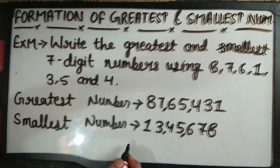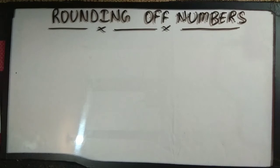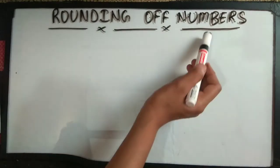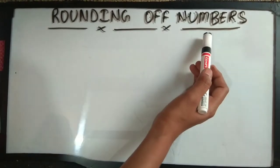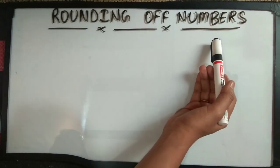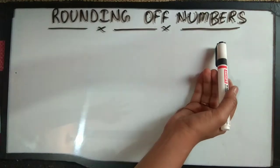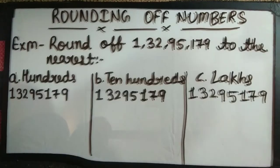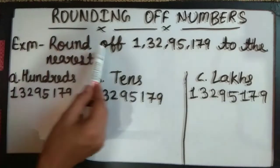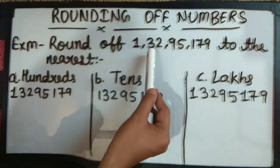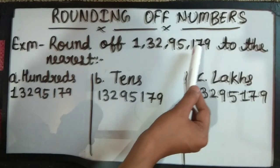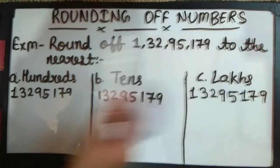Now we will learn rounding of numbers. Rounding of numbers. See, an example is given: Round off 1,32,95,179 to the nearest.